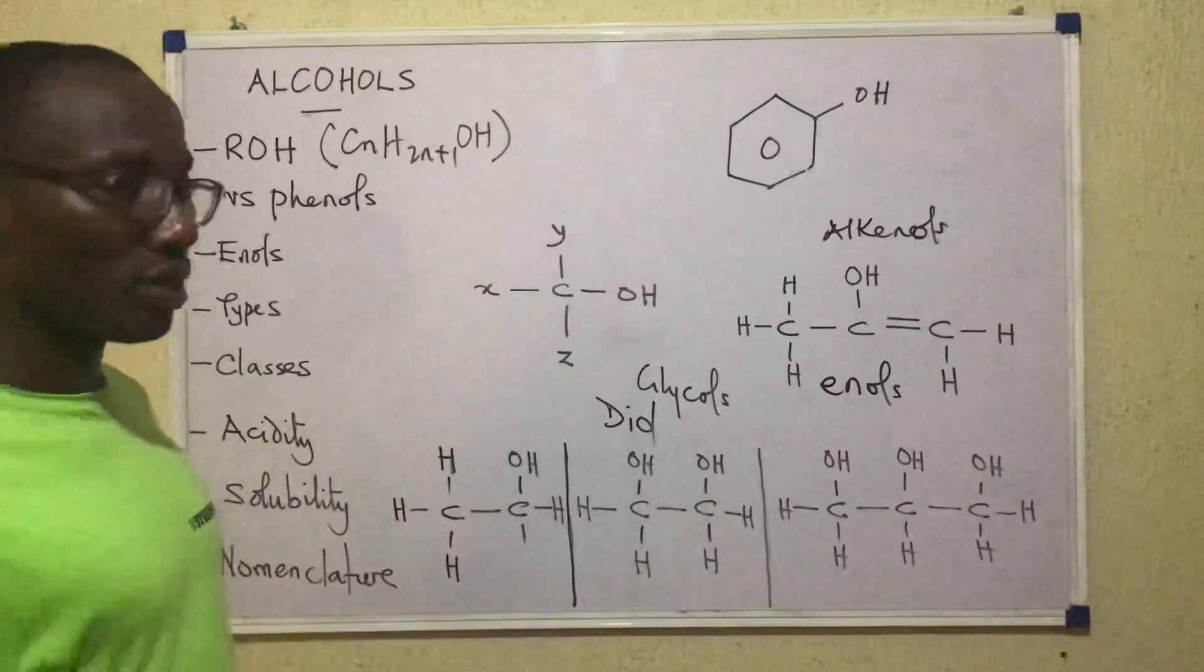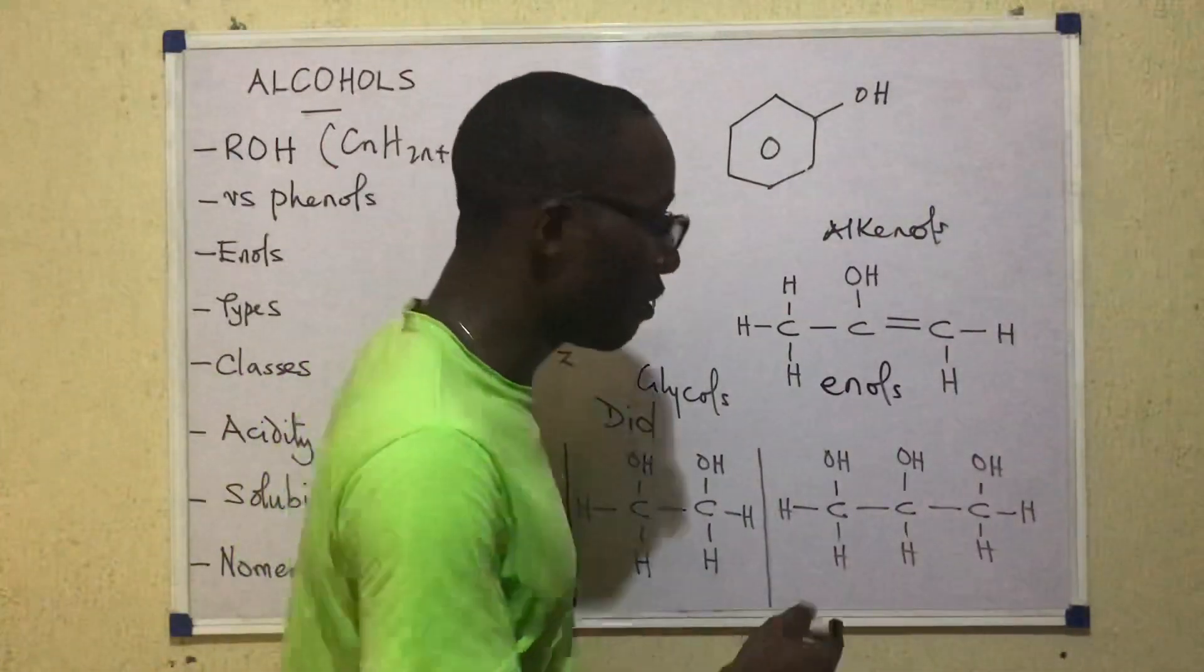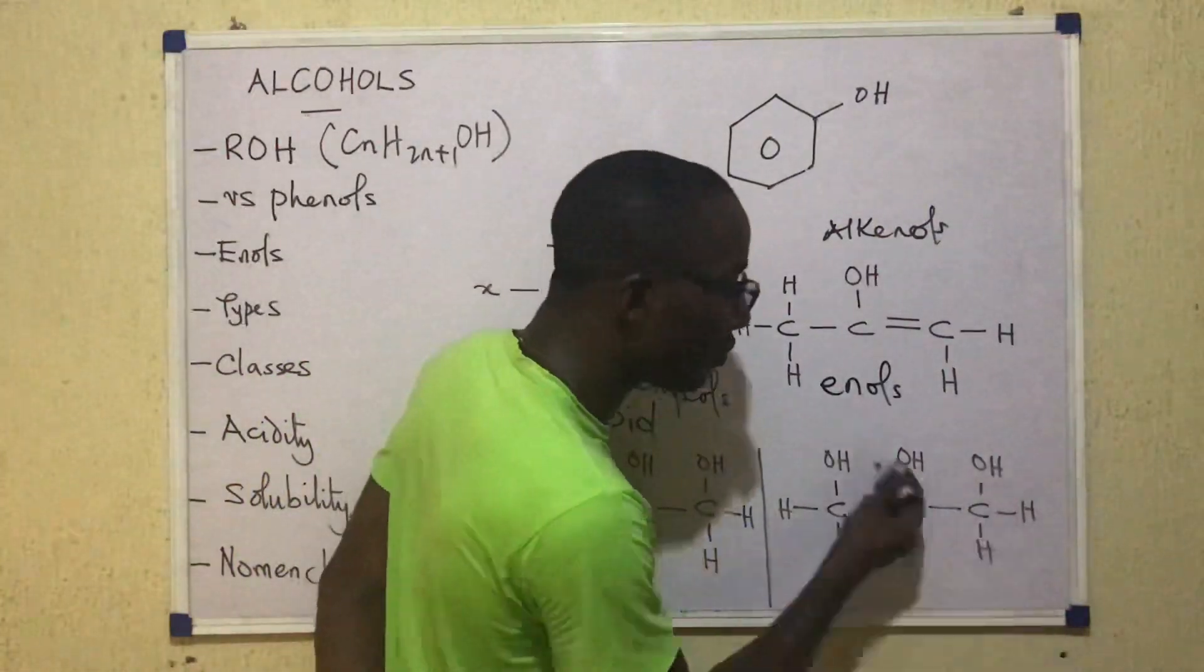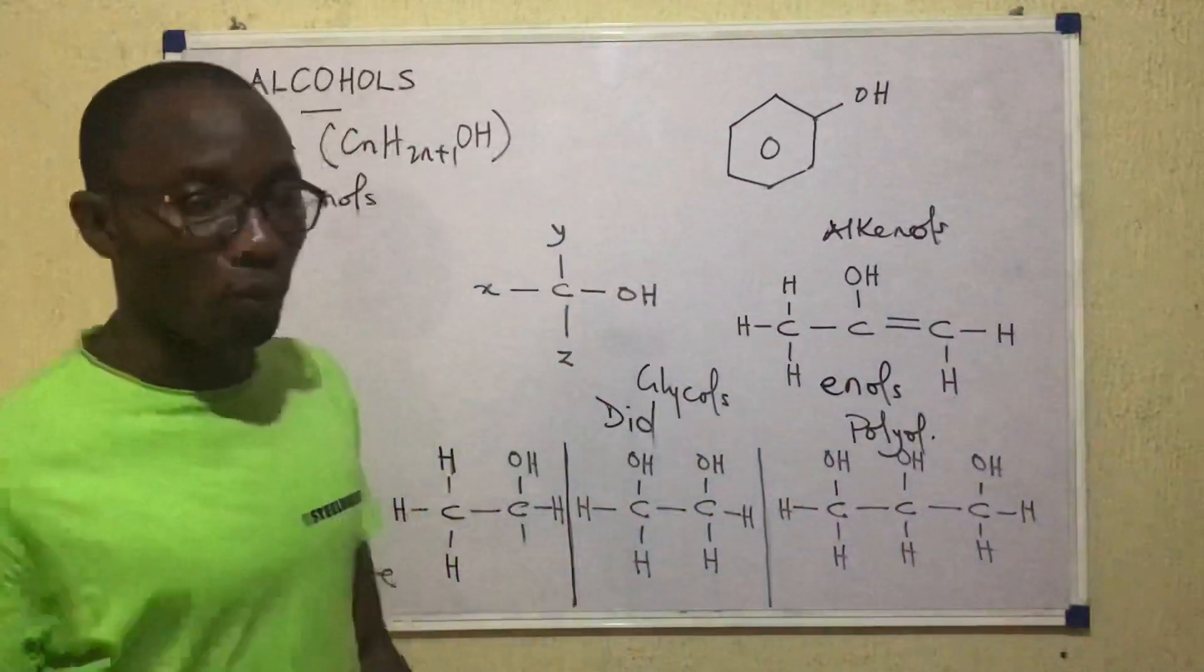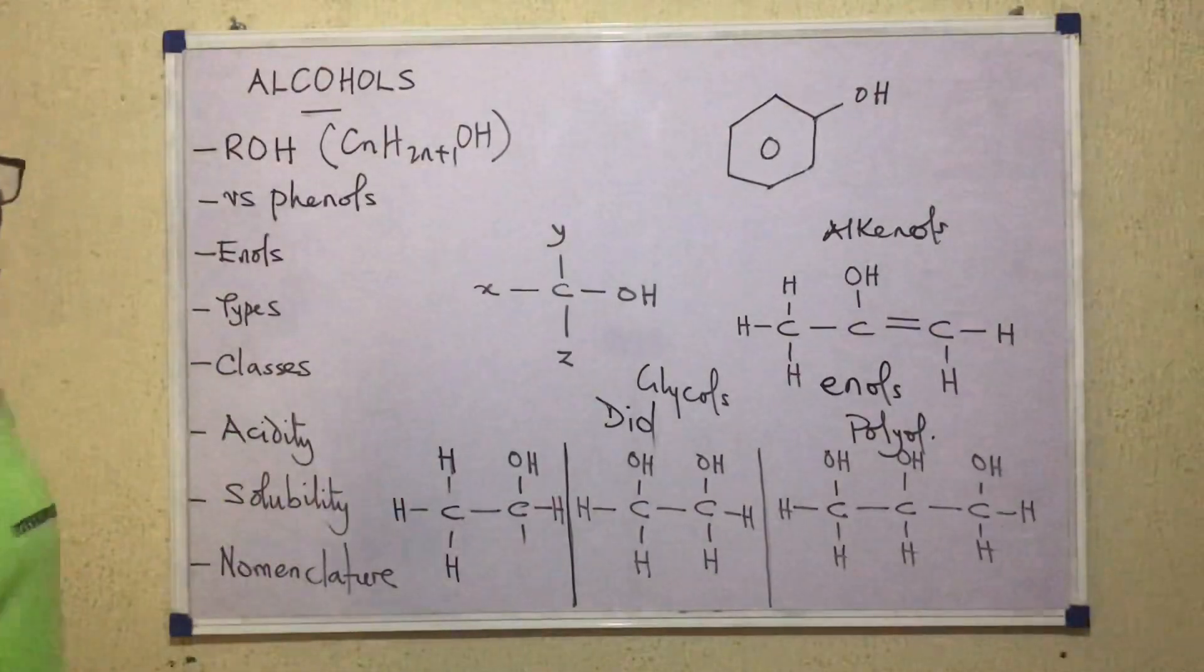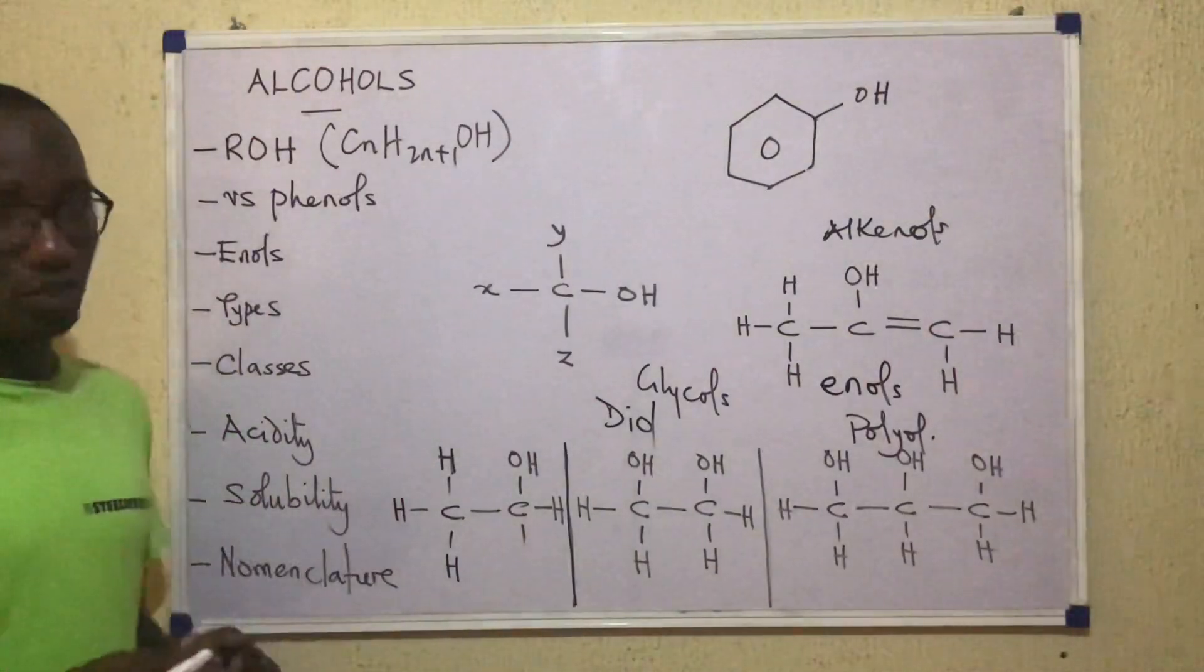Then for the triols, we can have a triol and if you decide to call this a polyhydric alcohol, it would be very fine to call it a polyol. So polyols are alcohols that are polyhydric. They have more than two OH groups.